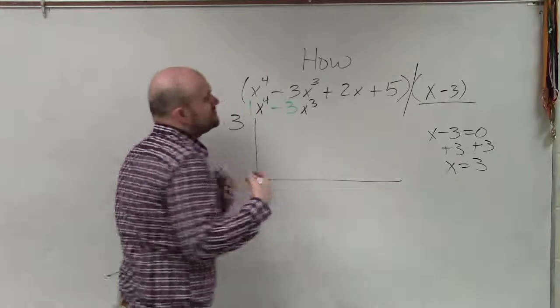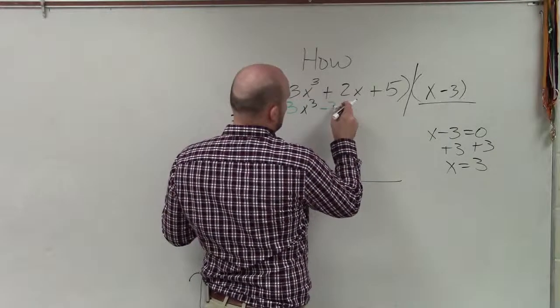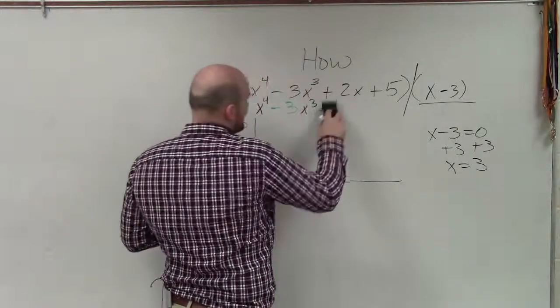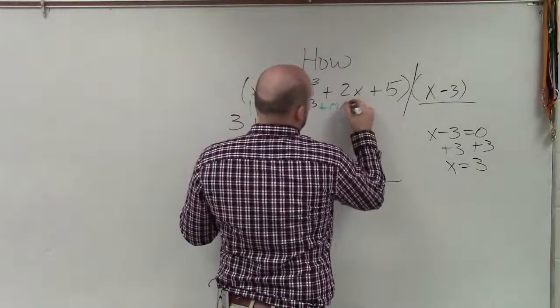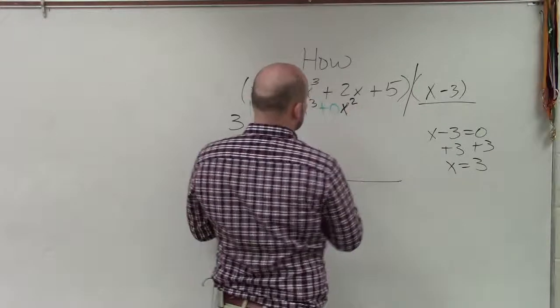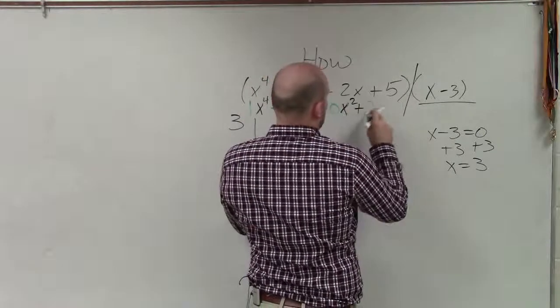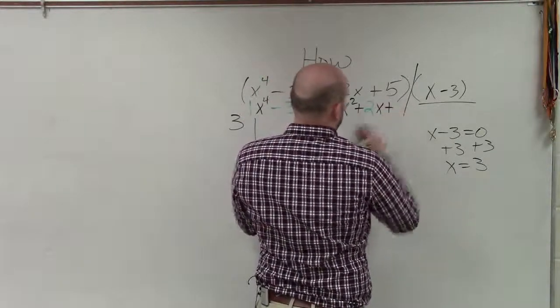Now, you can see I do not have an x squared. So I can always represent that, then, as positive 0x squared plus 2x plus 5.